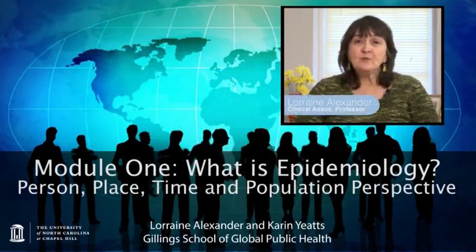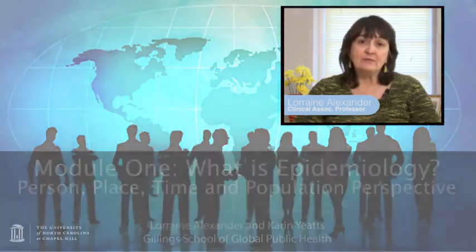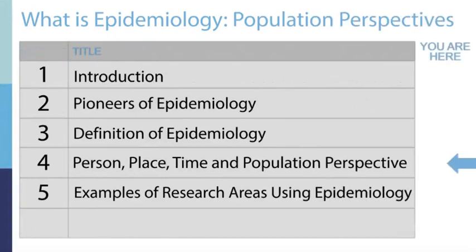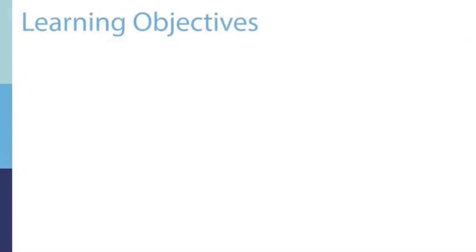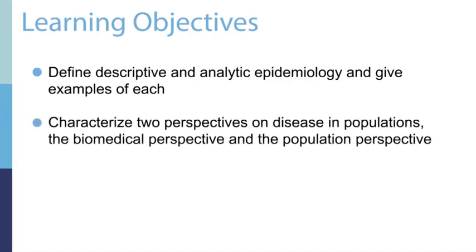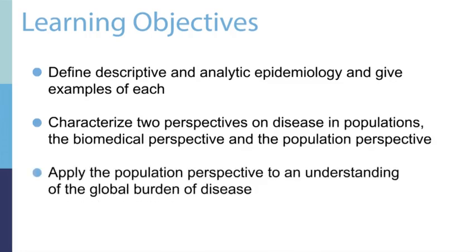In this lecture, we'll discuss person, place, time, and the population perspective of epidemiology. After you've reviewed this lecture, you should be able to define descriptive and analytic epidemiology and give examples of each, characterize two perspectives on disease in populations — the biomedical perspective and the population perspective — and apply the population perspective to an understanding of the global burden of disease.